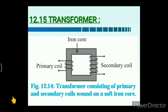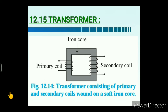In construction, the transformer consists of two coils — primary coil P and secondary coil S — insulated from each other and wound on a soft iron core. The primary coil is called the input coil and the secondary coil is called the output coil.